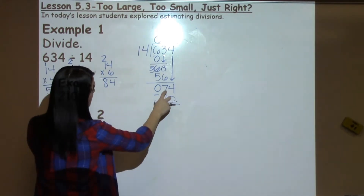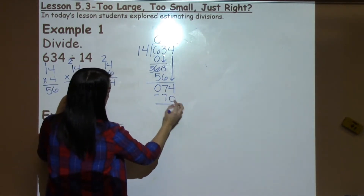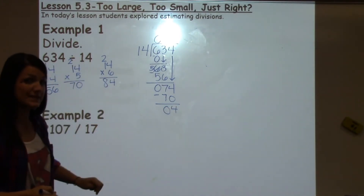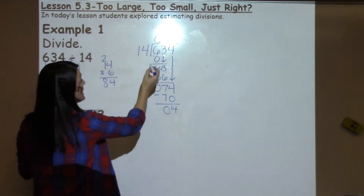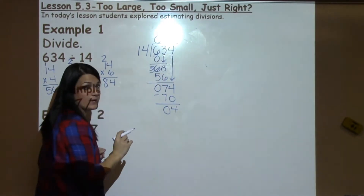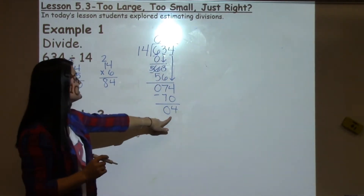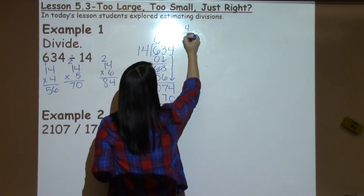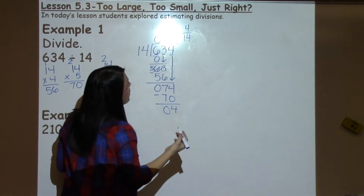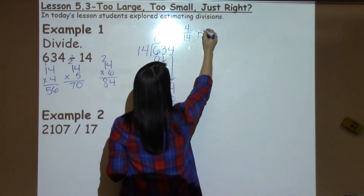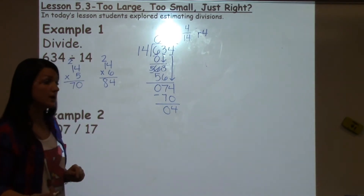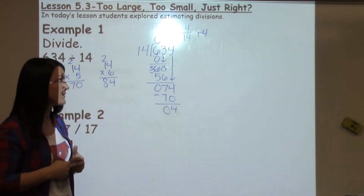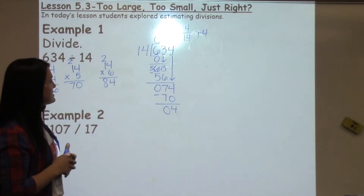We encourage students not to erase any problem they've done. So we already know 5 times 14 is 70. Subtract: 4 minus 0 is 4, 7 minus 7 is 0. There's nothing else to bring down — every single number has been taken care of. So this truly is a remainder. And in 5th grade, we write remainders as fractions, or some teachers may have them write it as remainder 4, R4. Both ways are appropriate — check what your student's teacher prefers.